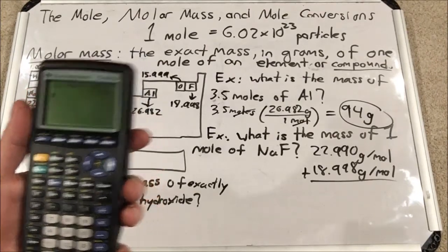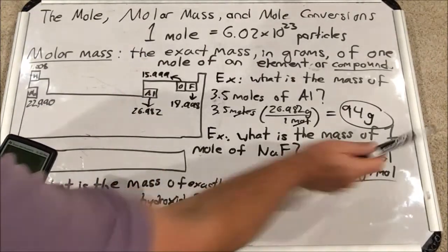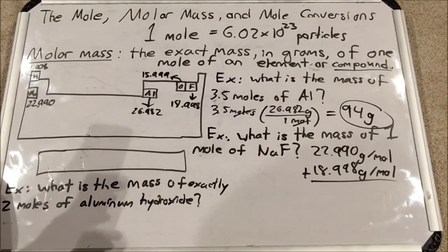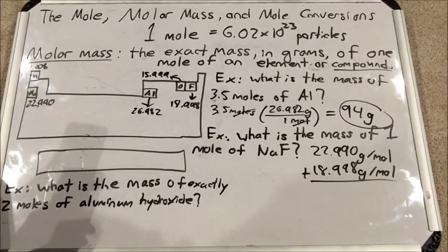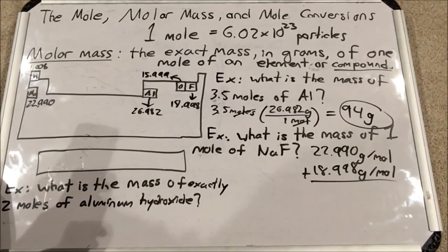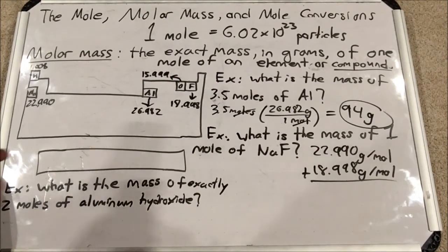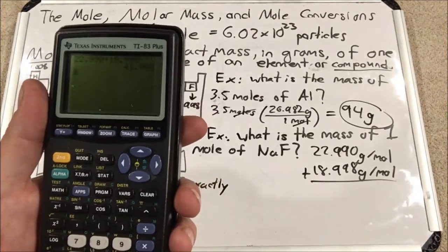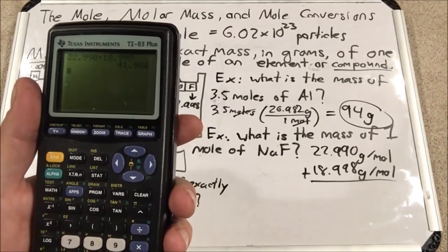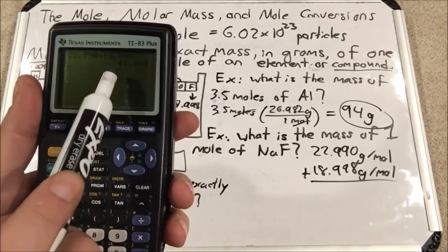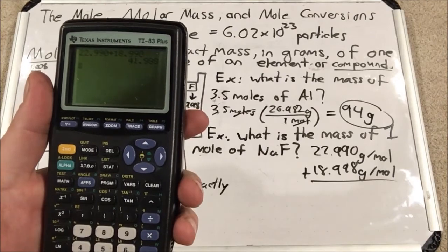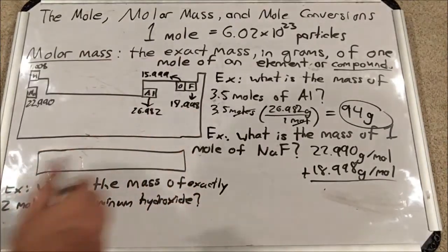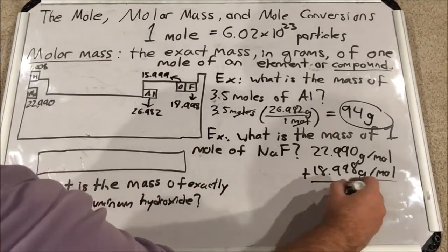My original given was not very accurate — it only had one sig fig; it was just the number one. So I have to round 41.988 to one significant figure, which is that first four, and round down to 40 without a decimal place. So the answer is 40 grams.